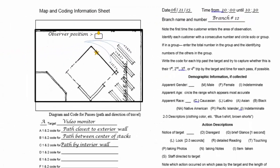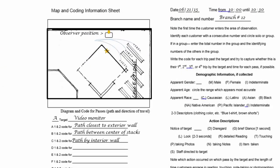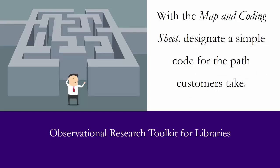Establish the parameters of your observation area and sketch them into the appropriate box, adding the location of doors, shelves, etc., as well as indicating the location of the observation targets and the potential pathways customers may use as they pass by the target. Use the lines below the diagram to designate a simple code for recording the path customers take as they pass to your target. The code should be simple and clear — consult the examples included.